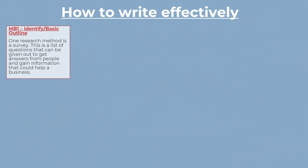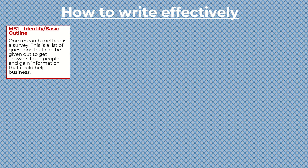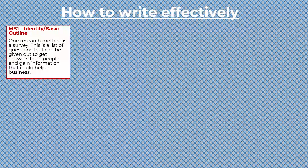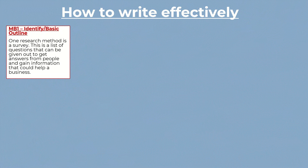For the next example we're going to look at a research method. For RO68 you don't actually have to do this anymore, but you used to have to talk about different research methods, so there's no harm in explaining an example. For the bottom mark band, we identify or give a basic outline of a research method — in this case, a survey, since everybody's familiar with that one. 'One research method is a survey. This is a list of questions that can be given out to get answers from people and gain information that could help a business.' That real basic outline would get you mark band one.